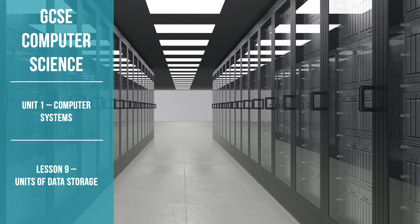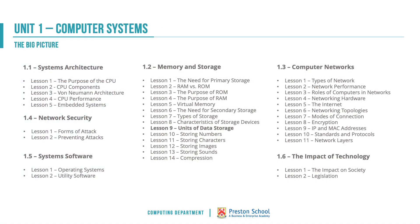This is lesson nine of the Memory and Storage section of the OCR GCSE Computer Science Unit 1 Computer Systems topic. Unit 1 is made up of six key topics: systems architecture, memory and storage, computer networks, network security, system software, and the impact of technology. This lesson sits within memory and storage and is what I call lesson nine, units of data storage.